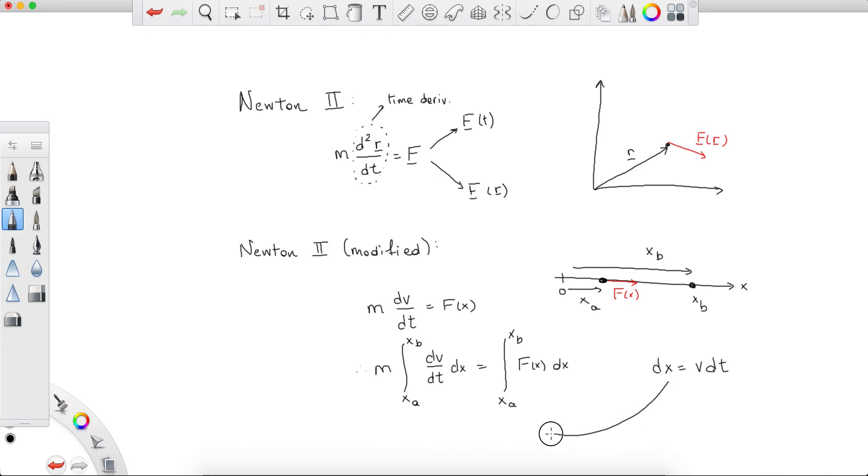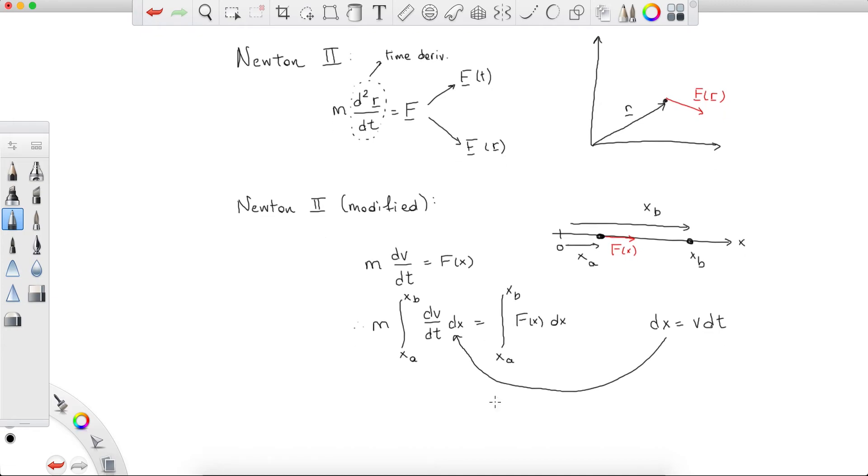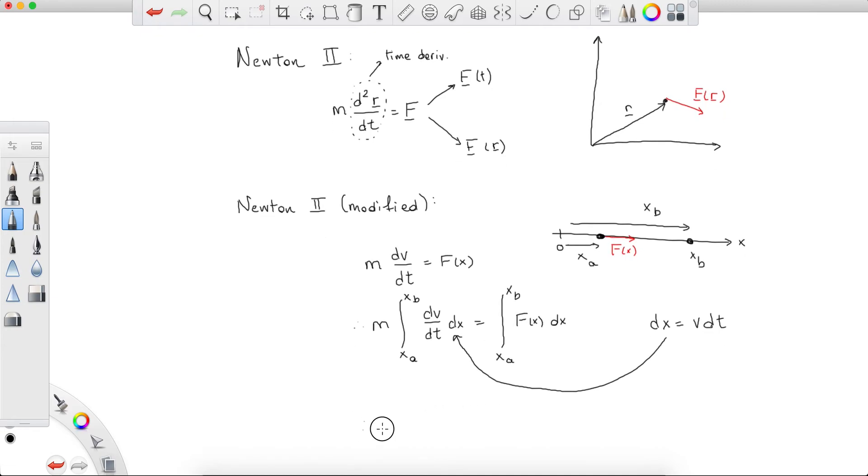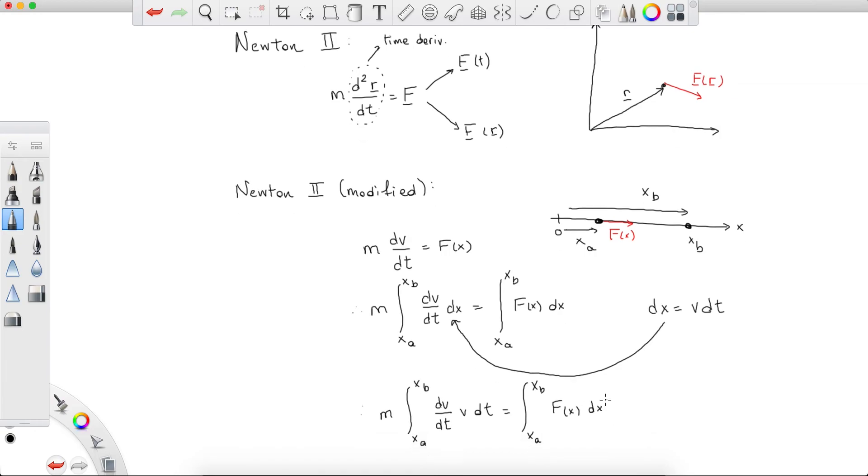So we substitute this right here and we get a very nice result actually. So what do we get? We get m times integral from xa to xb of dv/dt times v dt. That's good, why? Because this is time dependent with respect to time, we're integrating over time. That's good. This is equal to xa to xb f of x dx.